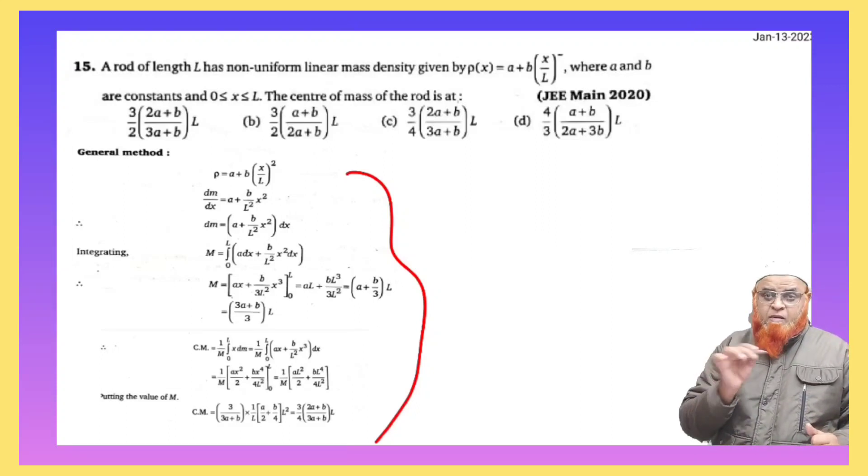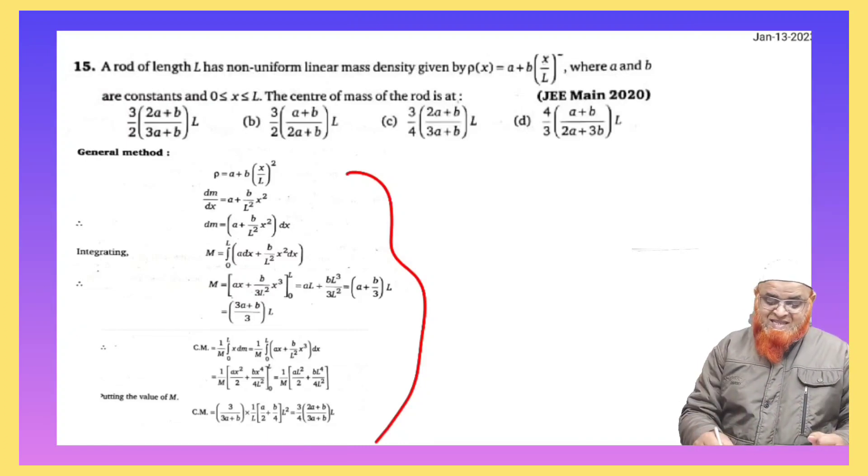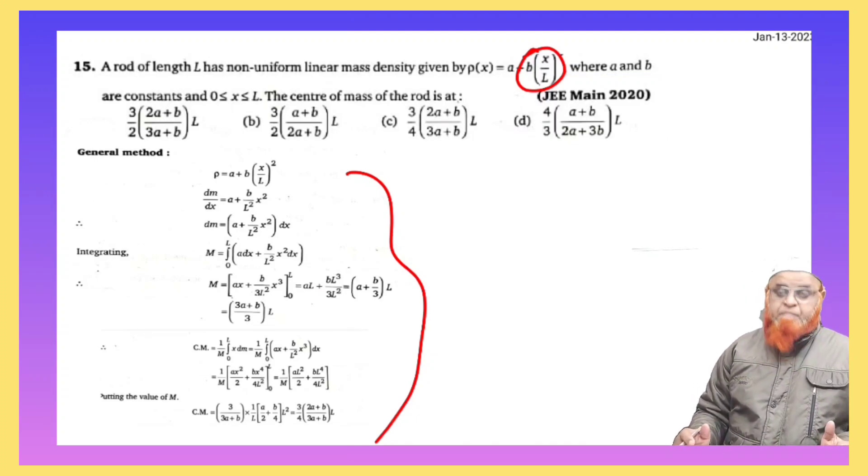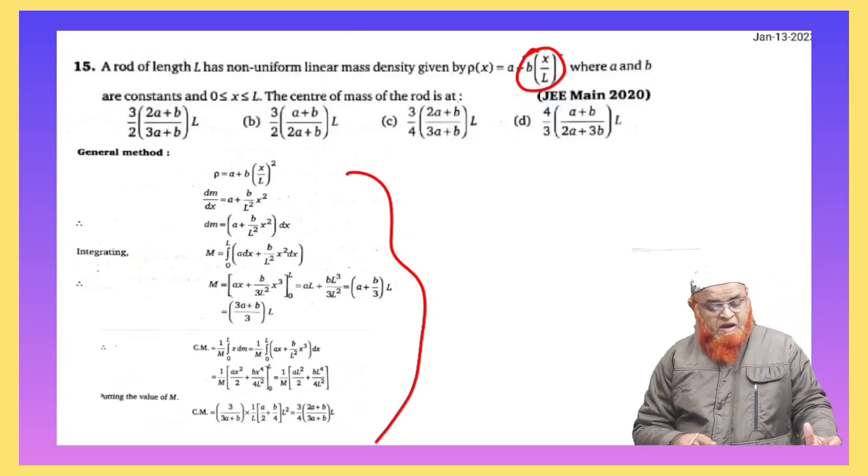the non-uniform part of the rod whose center of mass we have to find out is the second part which is given in the problem. That is B times X by L here. So this is the part which you have to consider in this case, which is said to be the non-uniform part.